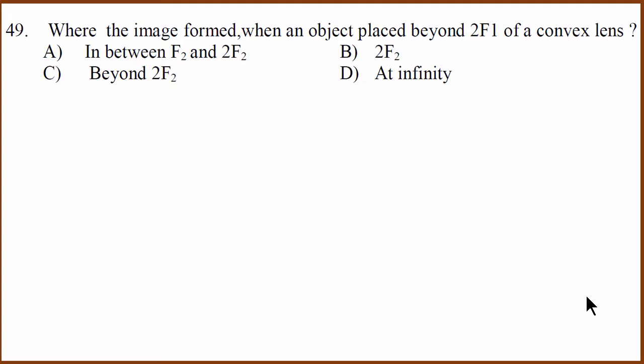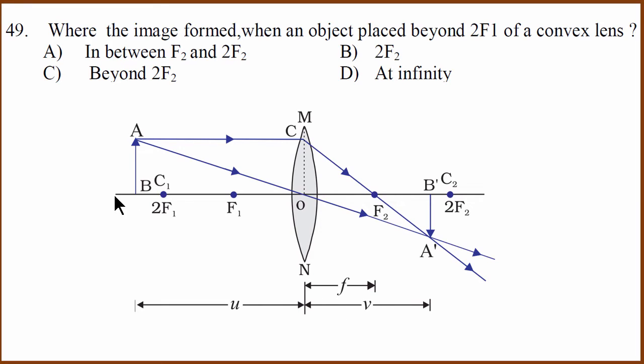We have the light question. Where is image formed when the object is placed beyond 2F1 of convex lens? The image is formed between F2 and 2F2. The ray diagram can be checked. If you remember, you can straight away say it is A.